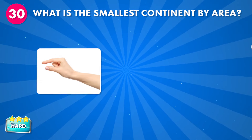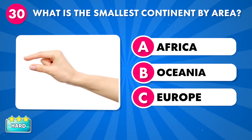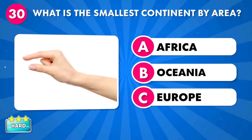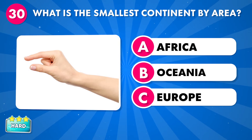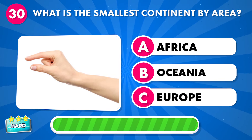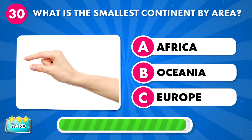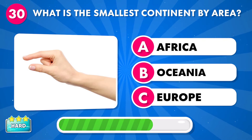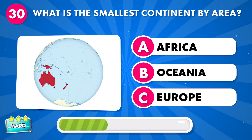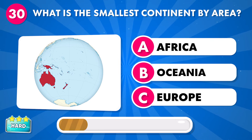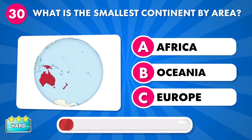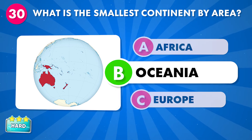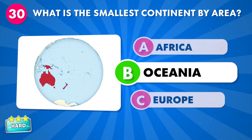What is the smallest continent by area? A: Africa, B: Oceania, C: Europe. It's Oceania.